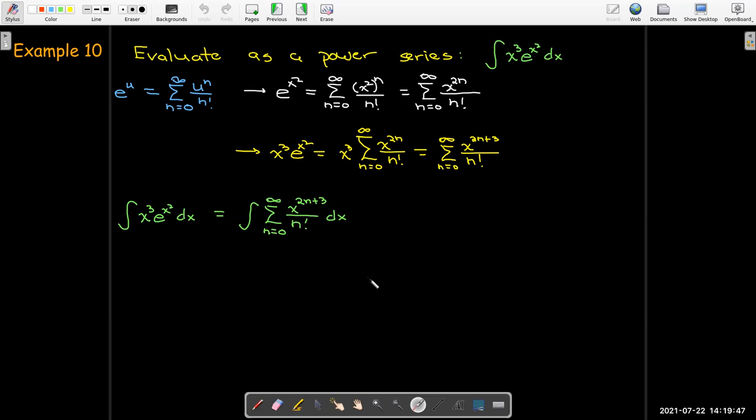And I can integrate that term by term. So I have to remember to do what? Use the power rule. Add 1 to the exponent. Divide by the new exponent. And then, of course, there'll be a constant of integration. So I hope you found this second video on the Taylor series and Maclaurin series useful.